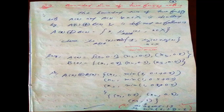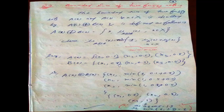Let's consider an example to make this clearer. Say A(X) = {X1/0.1, X2/0.5, X3/0.8} and B(X) = {X1/0.7, X2/0.3, X3/0.5}. We need to find the bounded sum between A(X) and B(X).